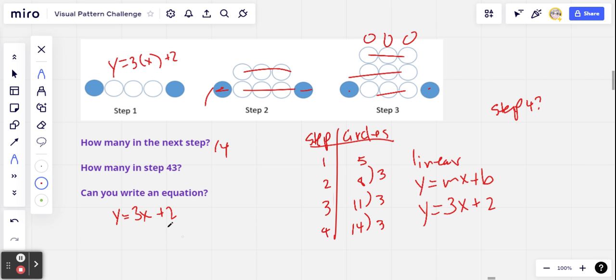Now to calculate the number in step 43, all we have to do is plug in 43 for x. So we can say y equals 3 times 43 plus 2. And 3 times 43, well 3 times 40 is 120, 3 times 3 is 9. So 129 plus 2 is 131 circles in step 43.